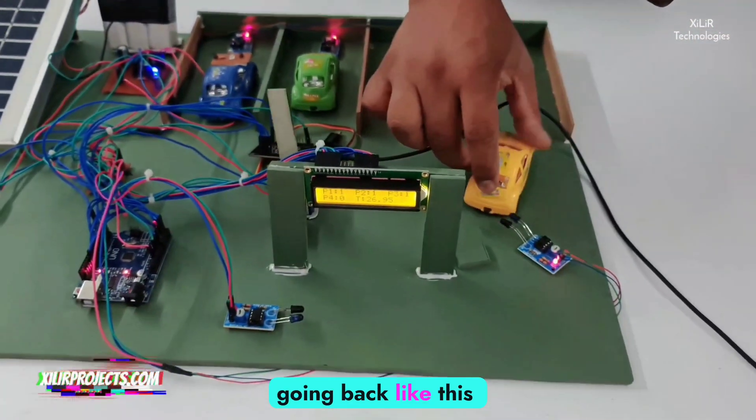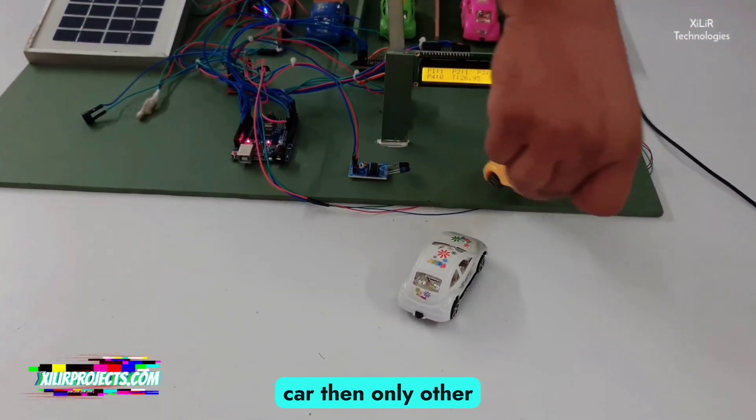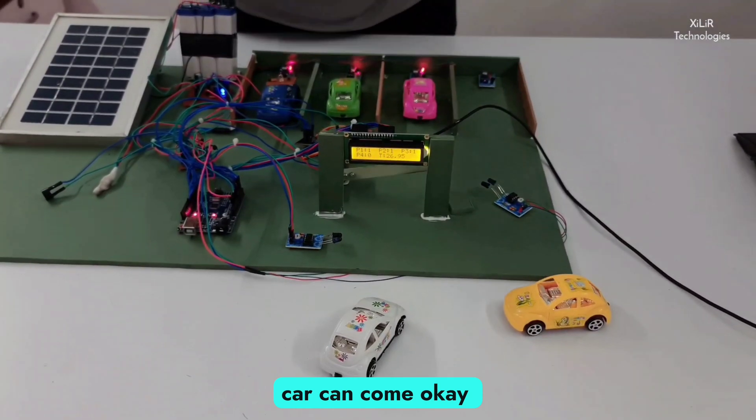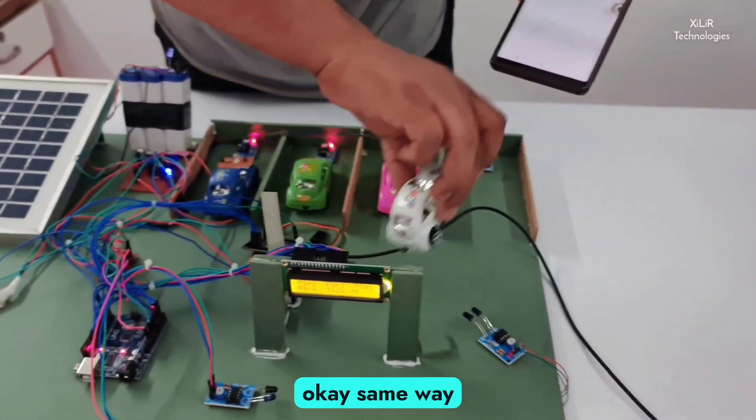If this car is going back, like this car, then only other car can come. Now this can come.